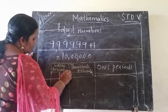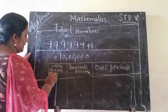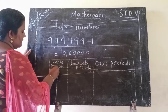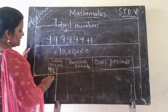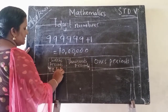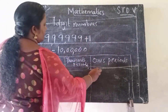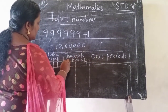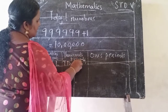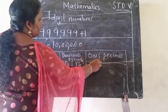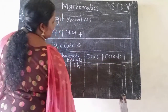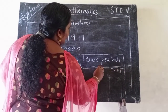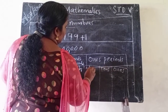There are two columns in the lakhs period. The first one is ten lakhs, and the second is lakhs. In the thousands period, there is ten thousand and thousand. In the ones period, there are ones, tens, and hundreds.